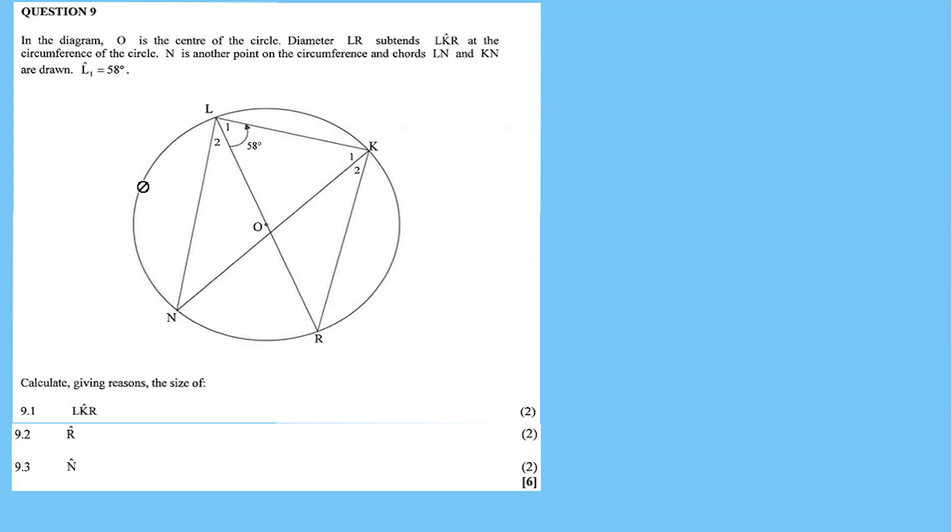So for 6 marks, in the diagram, O is the center of the circle, diameter LR. LR is the diameter which subtends angle LKR at the circumference of the circle. N is another point on the circumference and chords